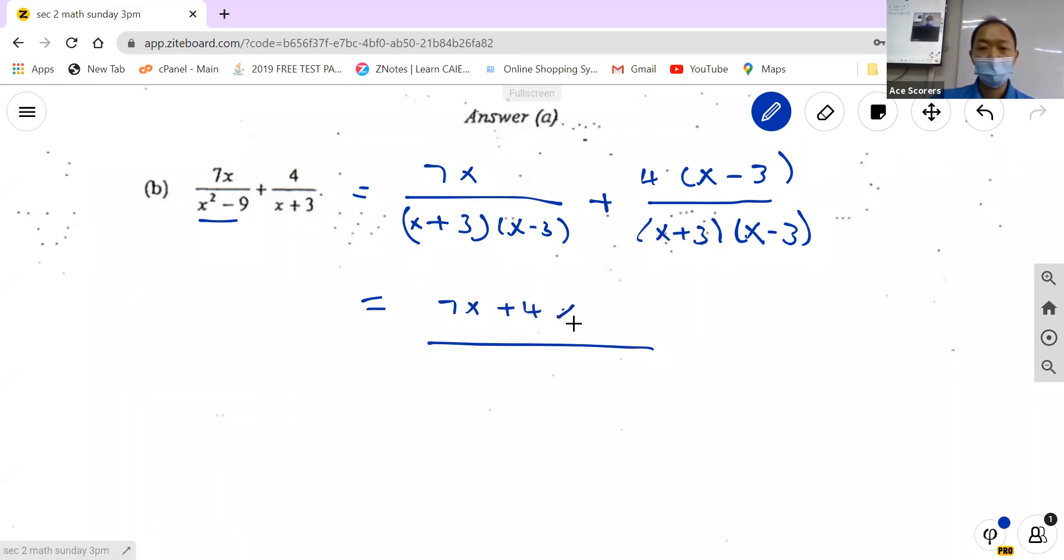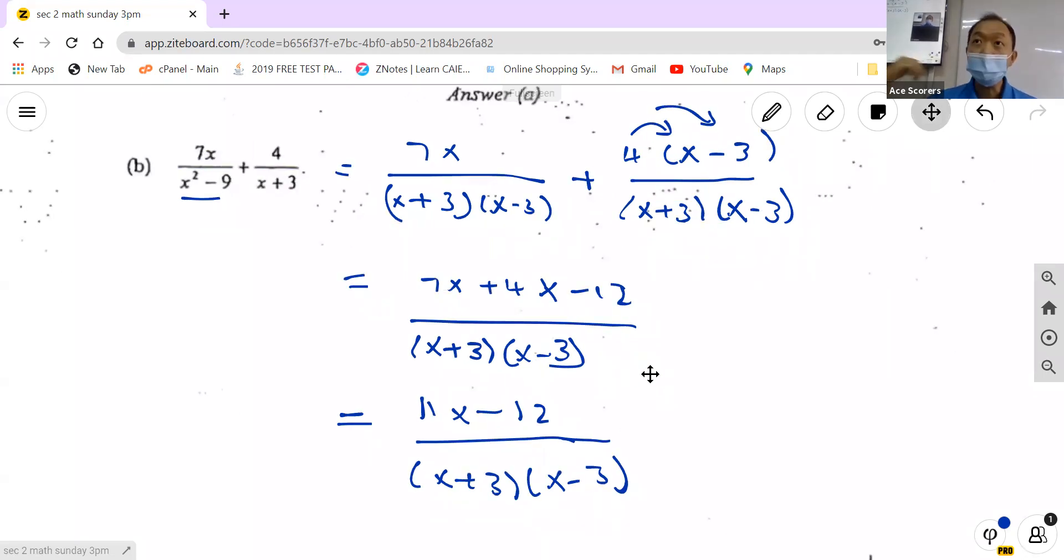Once they are the same, we take 7x plus this thing. So 7x plus 4x minus 12 over (x+3)(x-3). Seven plus 4 becomes 11x minus 12 over (x+3)(x-3), right? So this is the equation. Any questions? Okay.